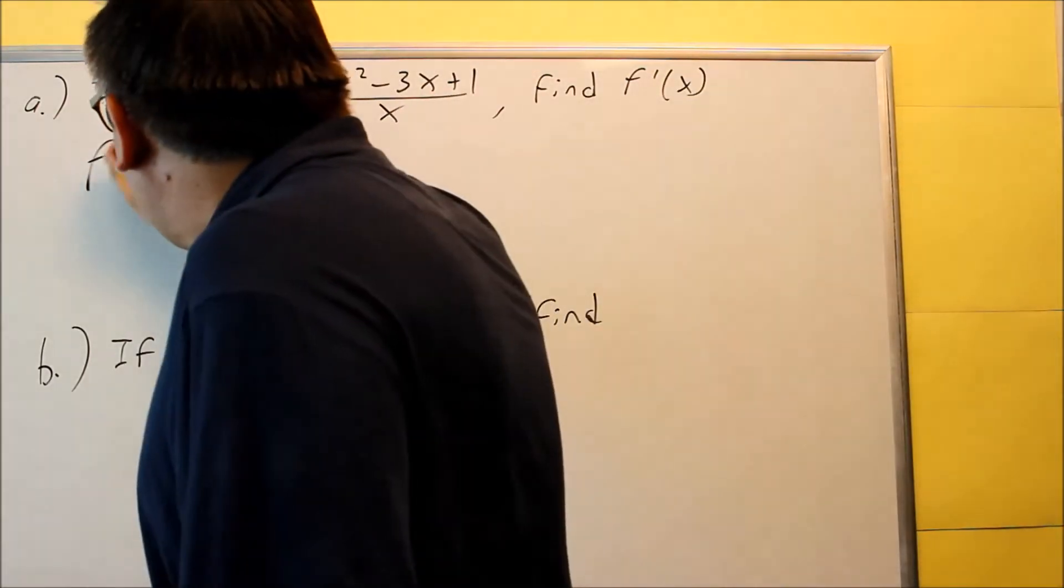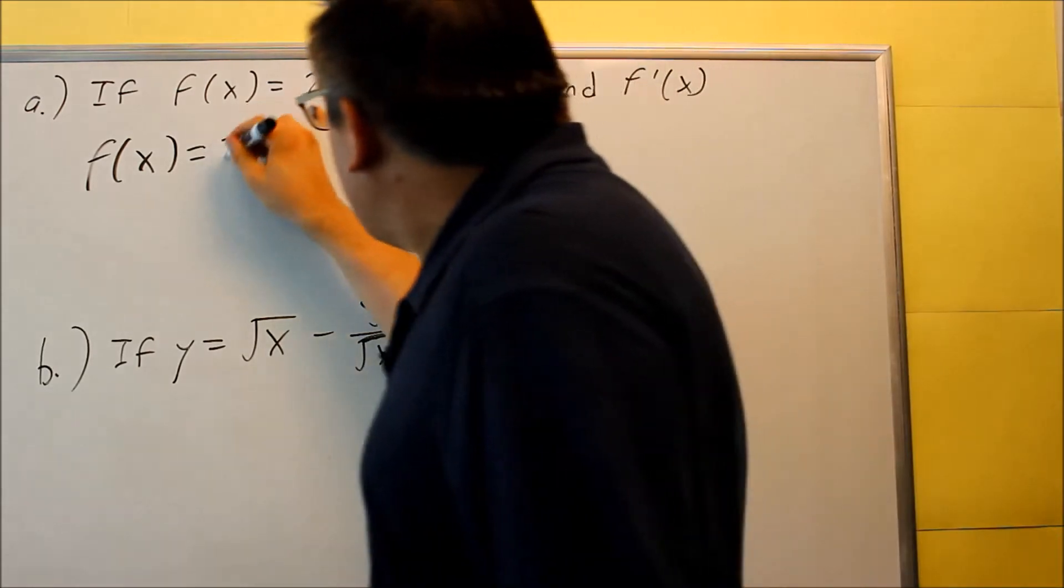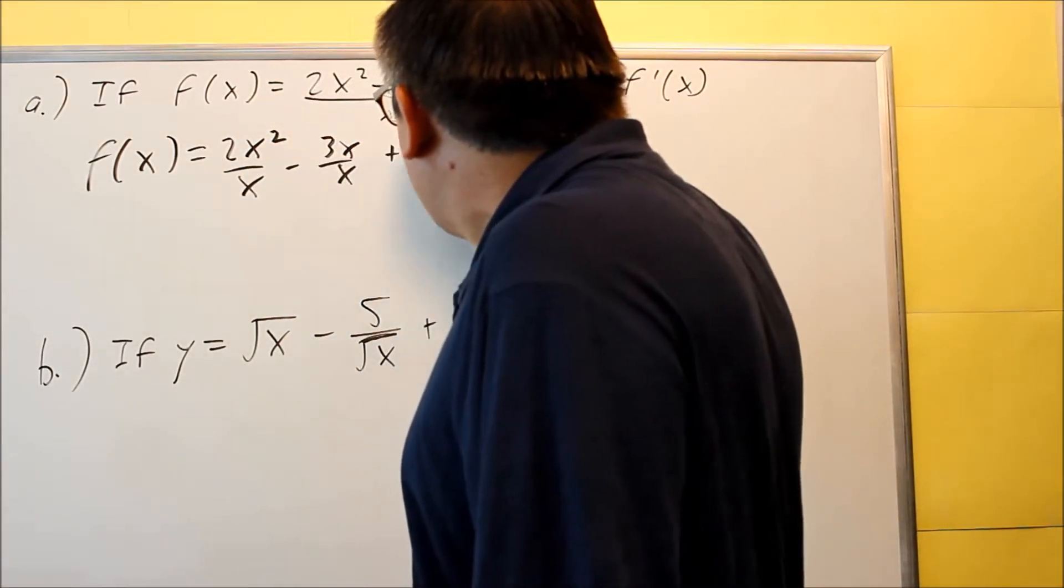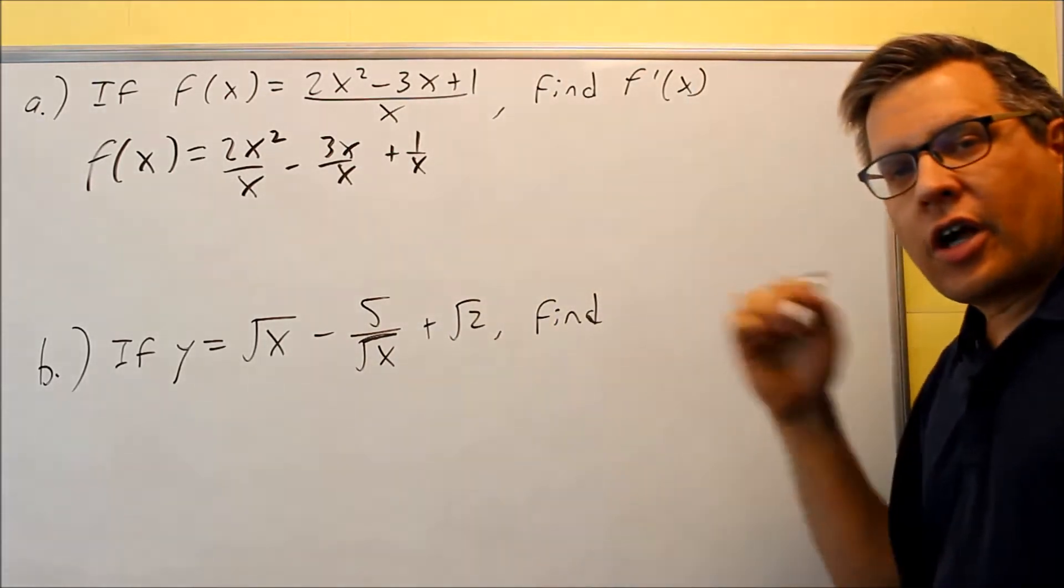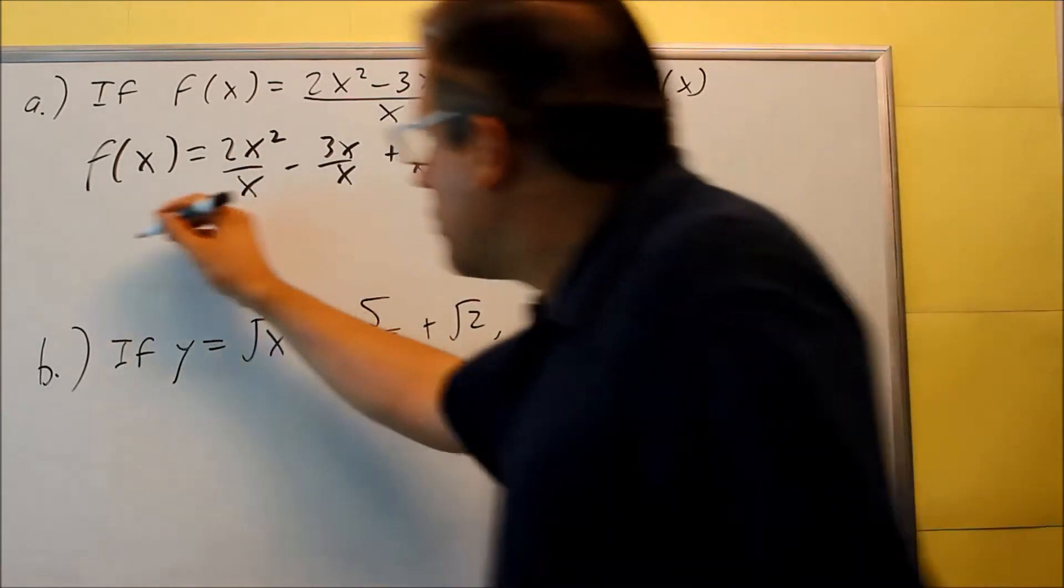That will create separate fractions, and we can apply the power rule to each one. So I'm going to do 2x squared over x minus 3x over x plus 1 over x. So everything on top I'm dividing by x. And then I'm going to simplify each of those separately.